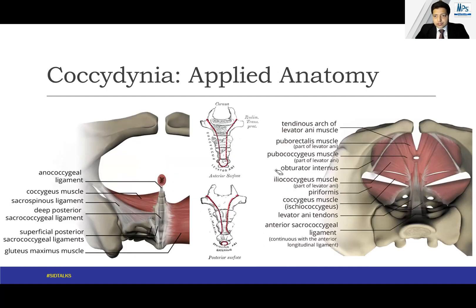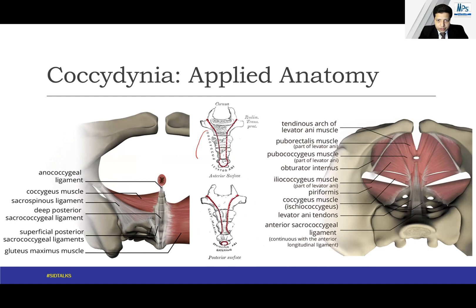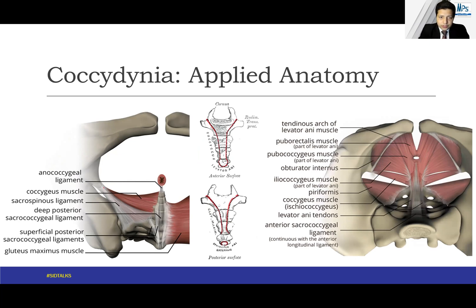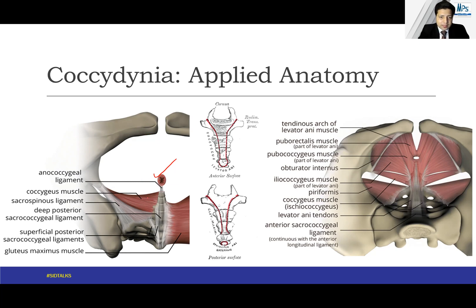We must also know about the attachments to the coccyx. This picture is from Gray's Anatomy, and you can see the attachments of the coccygeus and the levator ani on the anterior surface, as well as the gluteus muscle on both sides, and the sphincter ani externus on the posterior surface. These are very important muscular attachments. In addition, the anococcygeal ligament attaches at the tip, as seen here. This is the pelvis viewed from below — a bottom-up view — and the right picture shows the top-down view.